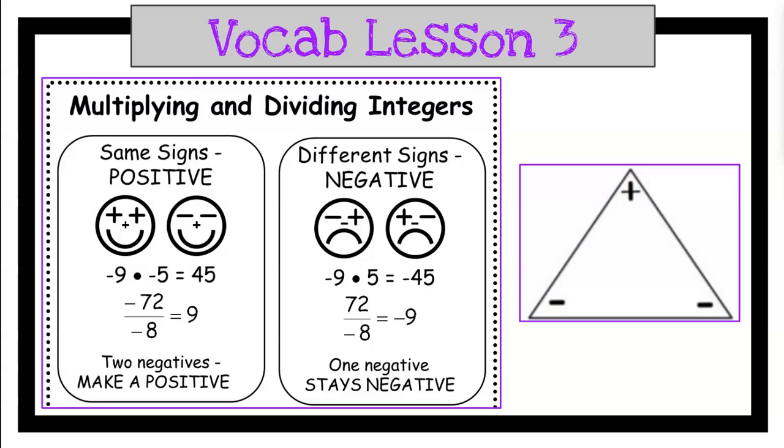Vocab lesson three: multiplying and dividing integers. Different rules than for adding and subtracting. Same signs - positive. So if you have a positive times a positive, the answer is positive. If you have a negative times a negative, the answer is still positive. In multiplication and division, two negatives make a positive. You have two examples here.